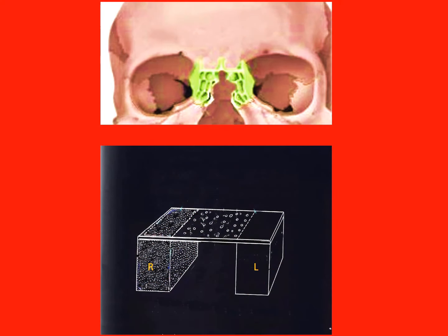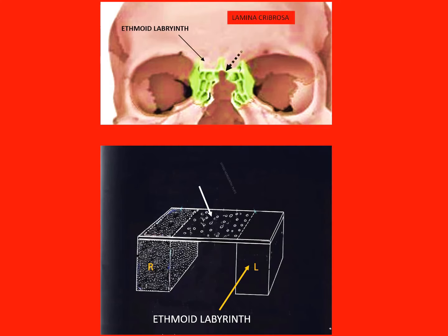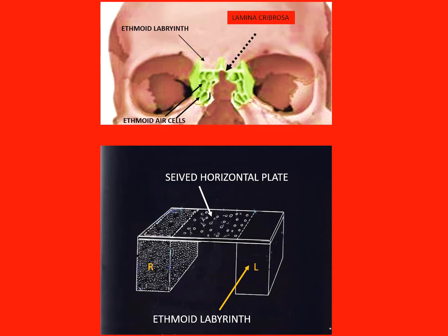The ethmoid bone consists of two ethmoid labyrinths, one on each side held together by a sieved horizontal plate called the lamina cribrosa. Each lateral mass or labyrinth has many bony septa, because of which there are many air cells in the ethmoid, called the ethmoid air cells.